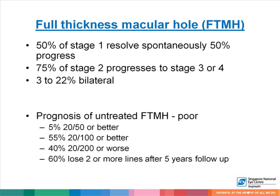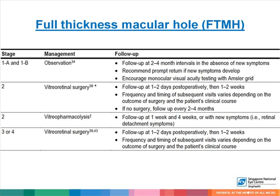3 to 22% of full thickness macular holes are bilateral. The prognosis of untreated full thickness macular hole is poor: 5% achieve vision of 20/50 or better, about half get 20/100 or better, 40% have 20/200 or worse, and 60% lose two or more lines after five years of follow-up. This picture shows the management and follow-up of full thickness macular hole according to the stages.